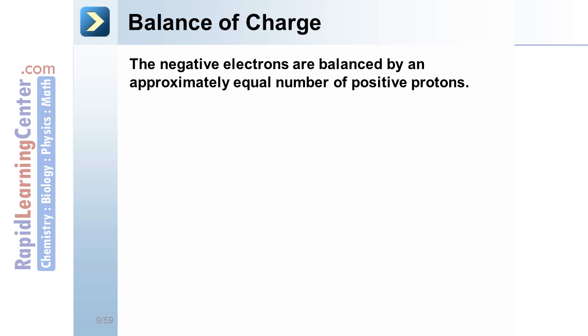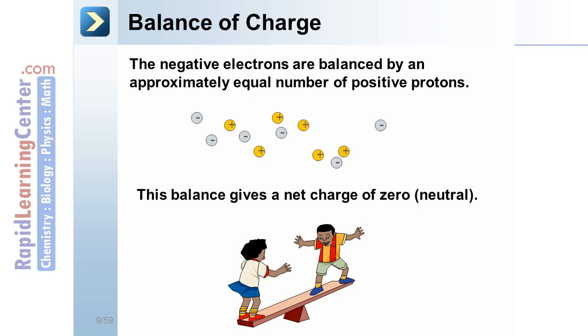The negative electrons in your body's atoms are balanced by an approximately equal number of positive protons. So, for example, you had six negative charges, just as an example. You would probably also have six positive charges. This balance gives a net charge of zero, or neutral, most of the time.